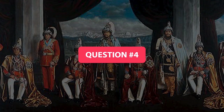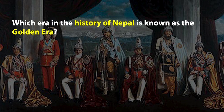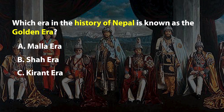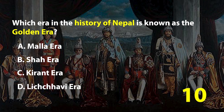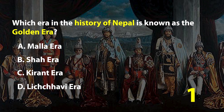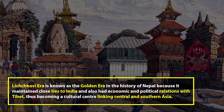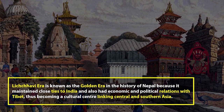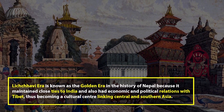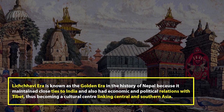Question number 4. Which era in the history of Nepal is known as the Golden Era? A. Molla Era, B. Shaha Era, C. Kirat Era, or D. Lichavi Era. The right answer is D. The Lichavi Era is known as the Golden Era because it maintained close ties to India and had economic and political relations with Tibet, becoming a cultural center linking Central and Southern Asia.